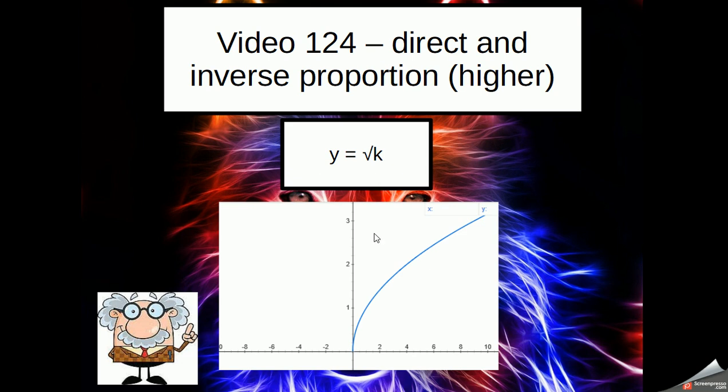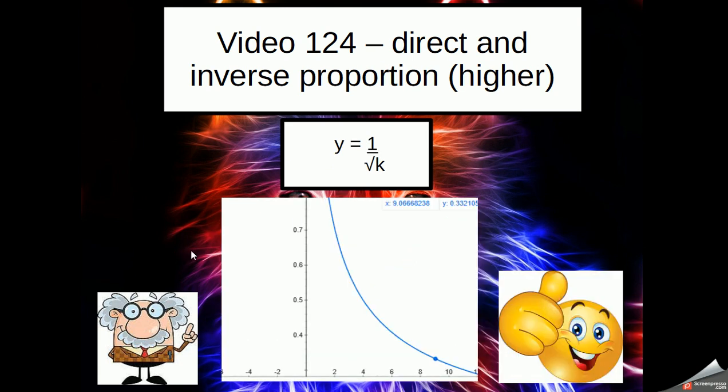The last ones then are the roots. If you had a graph which is the root, so y is the root of k or y is the root of x, you can see here you've got this curve going upwards like this. Whereas if it was inversely proportional, it's coming down now. Notice how it never...